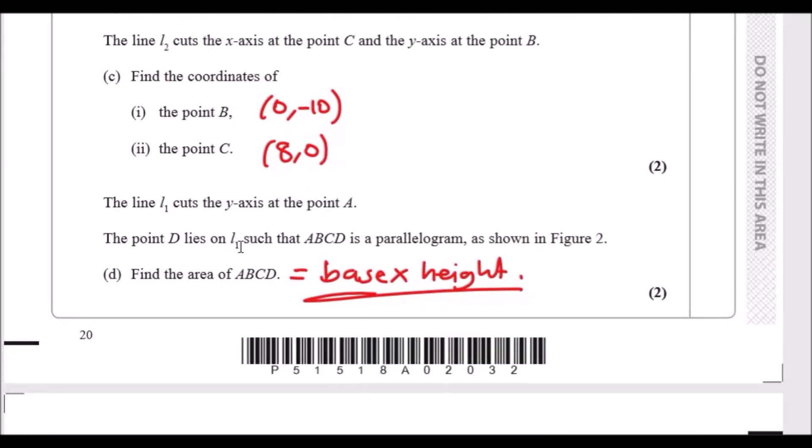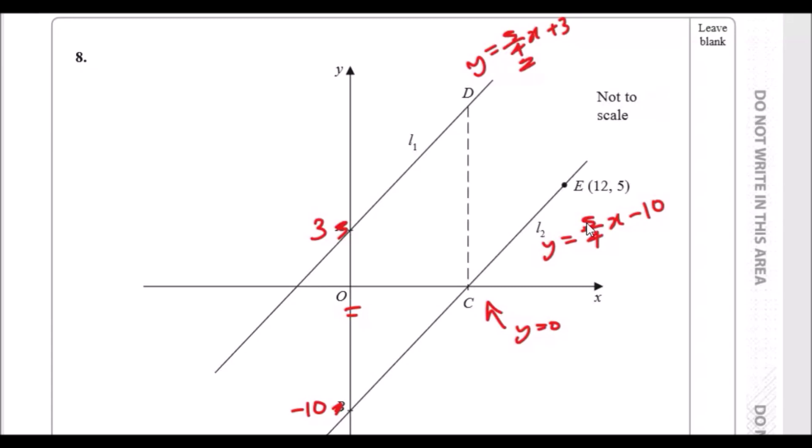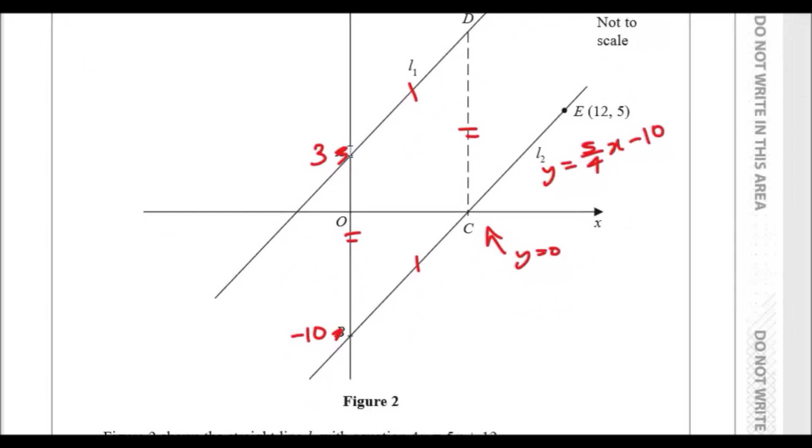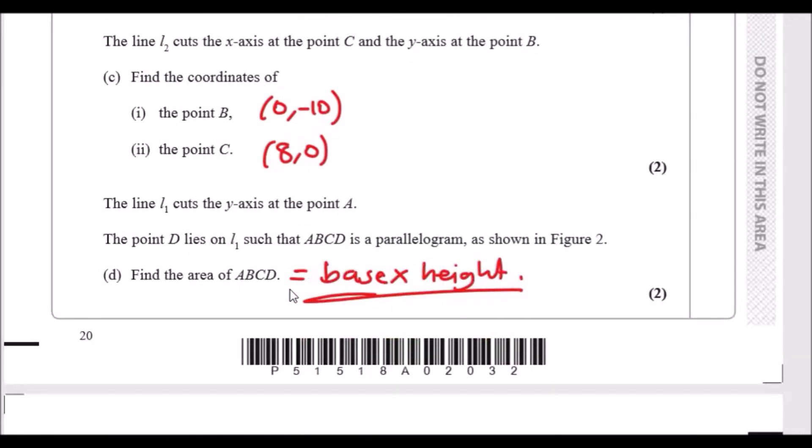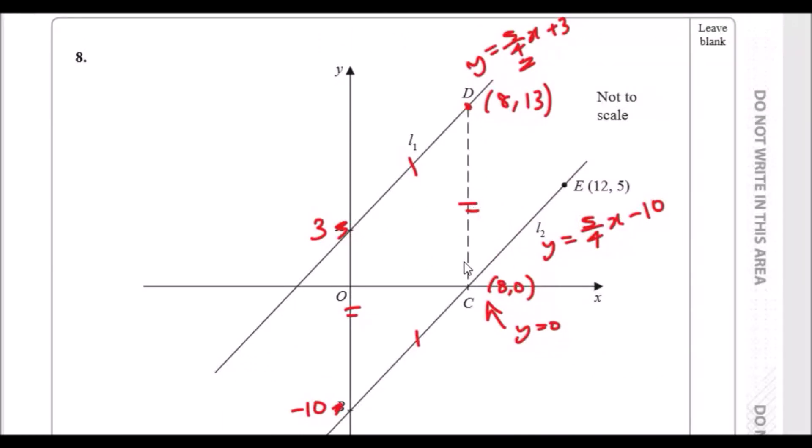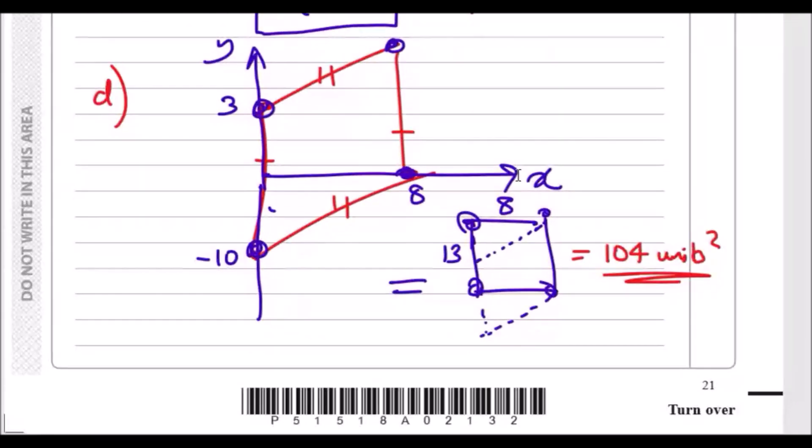The line L1 cuts the y-axis at point A, and we got the quadrant which is (0, 3). The point D lies on L1 such that ABCD is a parallelogram as shown in Figure 2. We know that all of this is a parallelogram, so just draw some lines to indicate it. If this is a parallelogram and you know this is 3 and minus 10, and this is exactly 13 units above, and we got the value C which was (8, 0), we can see that this is 13 units up, so this D coordinate would be (8, 13).